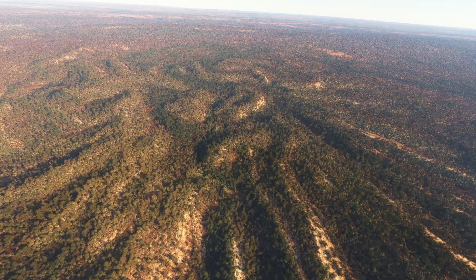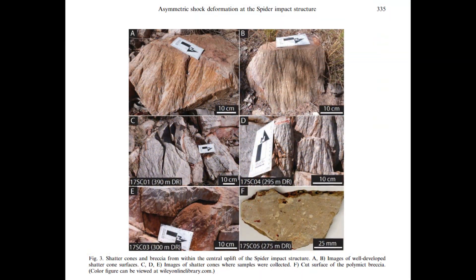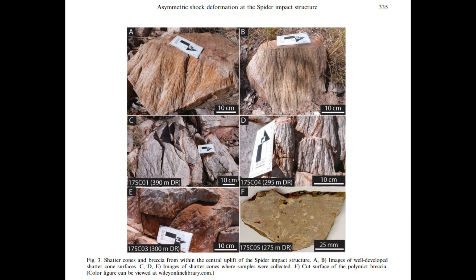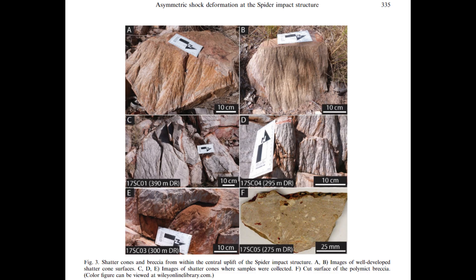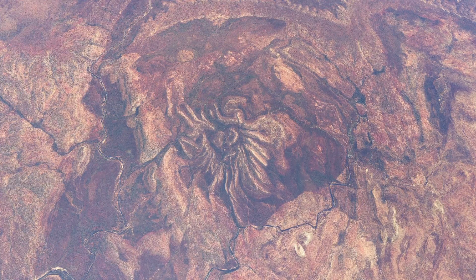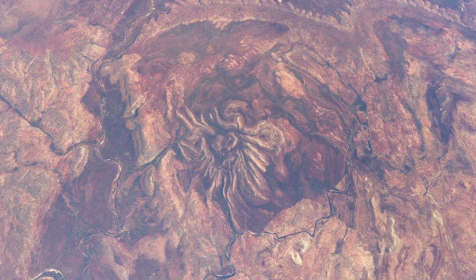When geologists first began exploring the Spider Structure in detail, they were struck by the presence of shatter cones. These cone-shaped fractures, which can extend over a metre in length, were found embedded in the quartzite rocks of the central dome and surrounding thrust sheets. Unlike any other geological formation, shatter cones are a unique and telltale sign of an impact event, formed under the extreme pressure and shock of a meteorite collision. The distinctive conical patterns, which fan out from a central point like the flaring of a jet, told a story of unimaginable forces at work. The intense shock wave generated by the meteorite impact had passed through the rock, fracturing it in a way that only a violent event could produce.